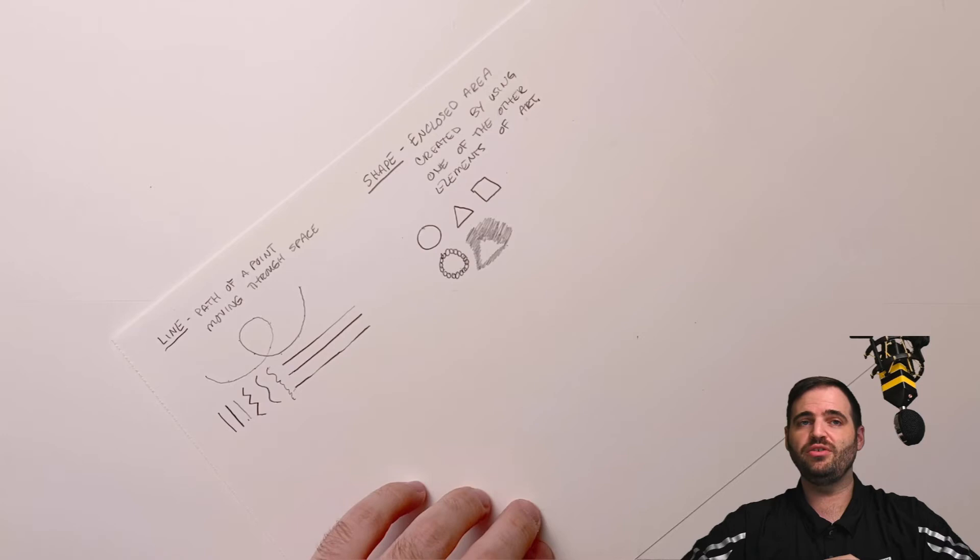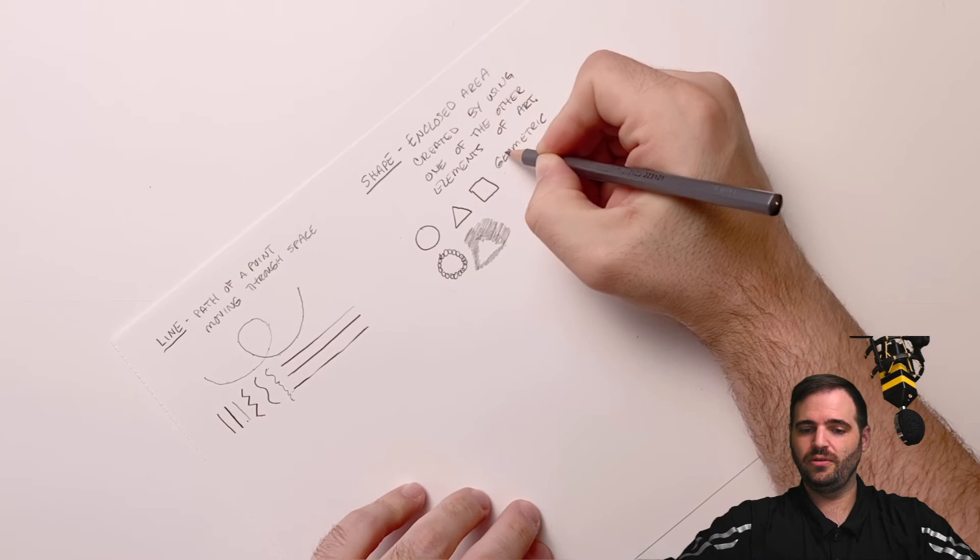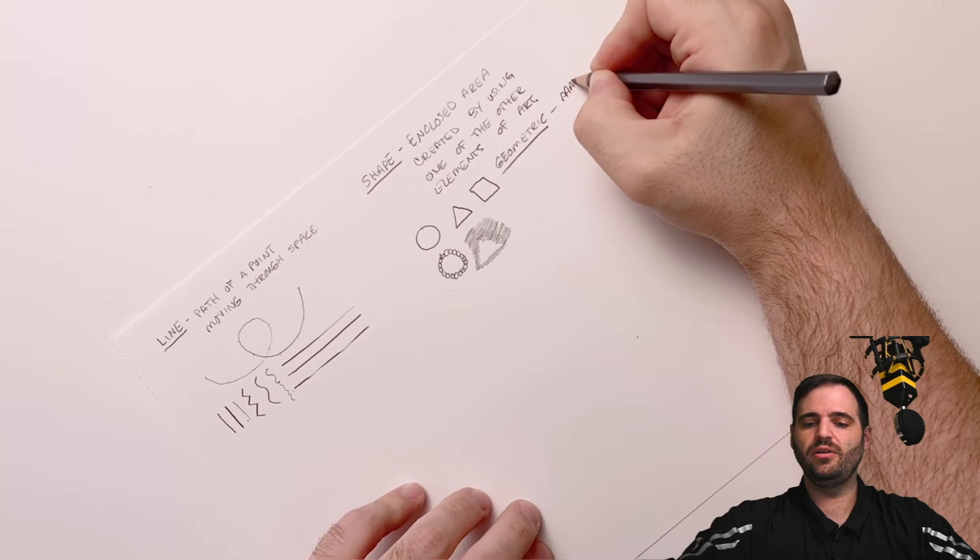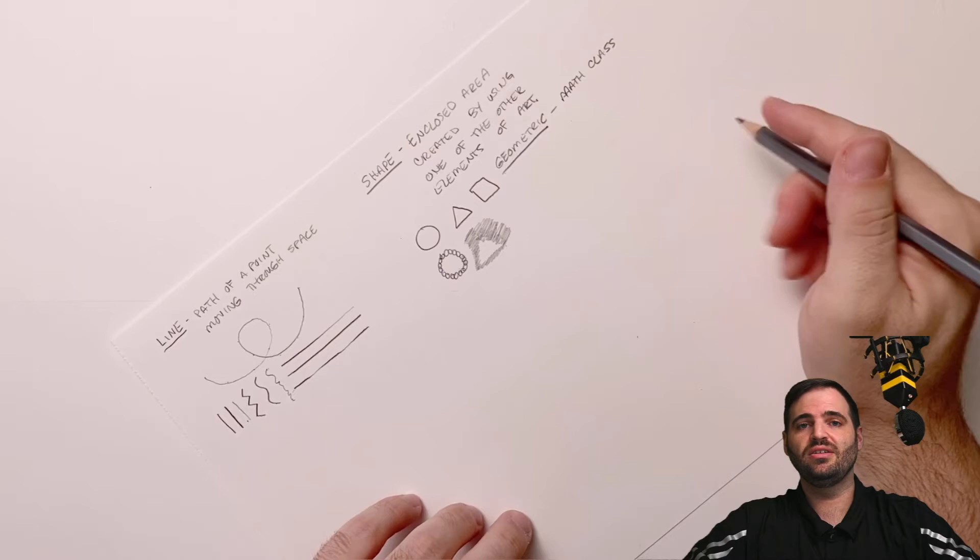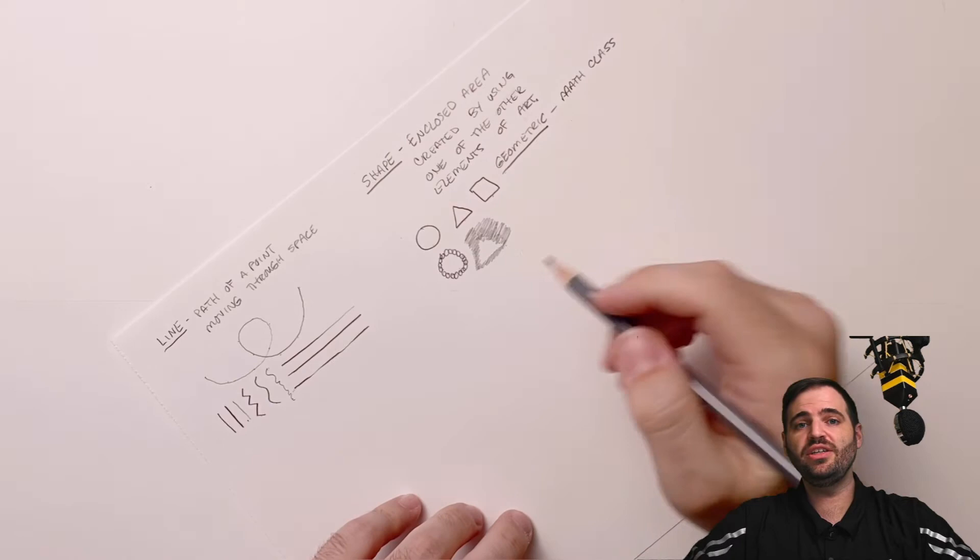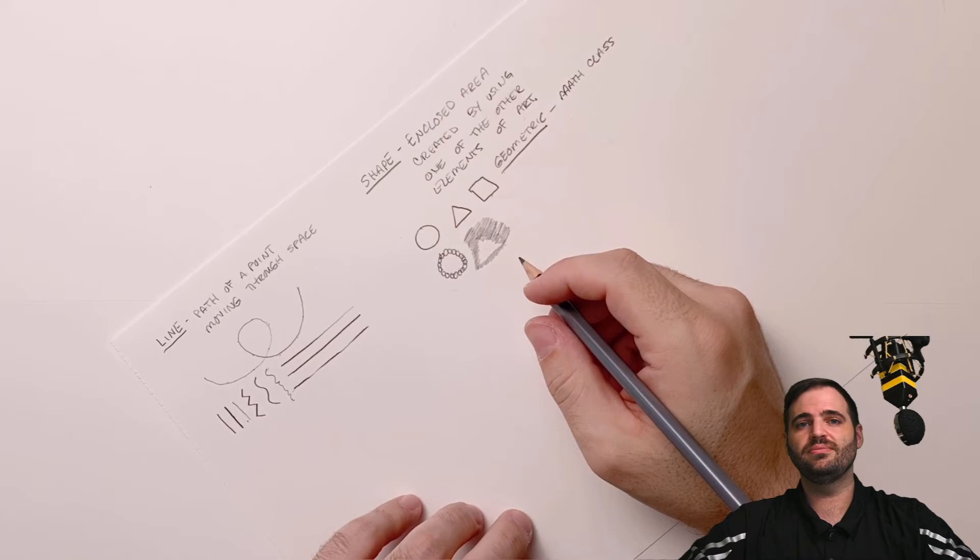So shape is an enclosed area created by using one of the other elements of art. We have two different types of shapes. The first is geometric. These are the ones that you find in math class. Go ahead and think of a couple examples of shapes you've heard of in math class. We already have a couple examples here. The circle, triangle, and square. See if you can come up with a few more. Take just a moment. Great.